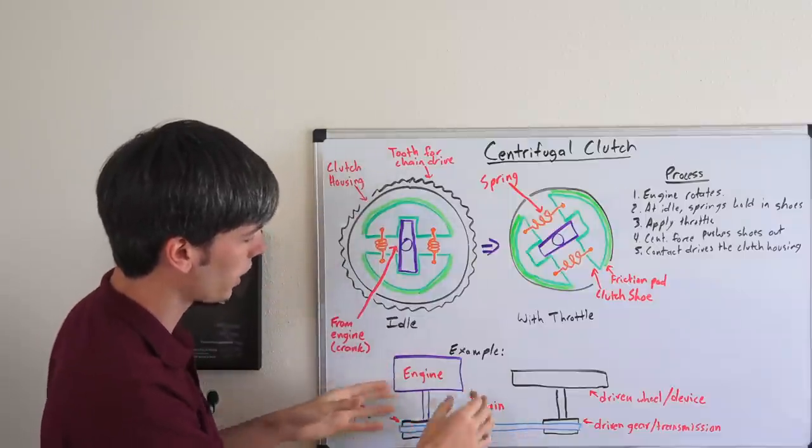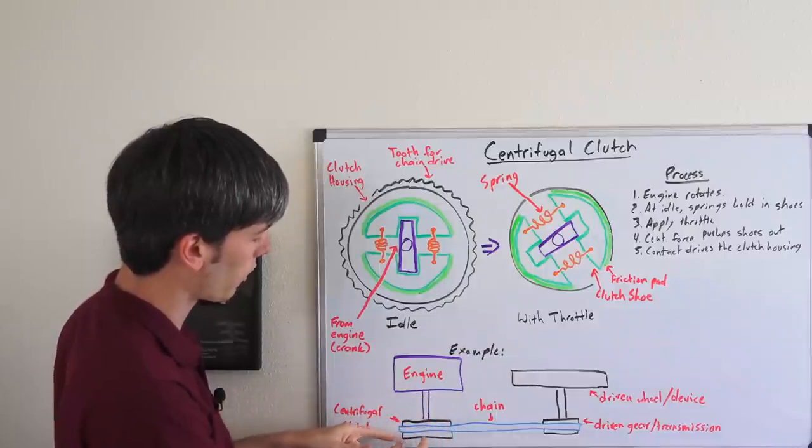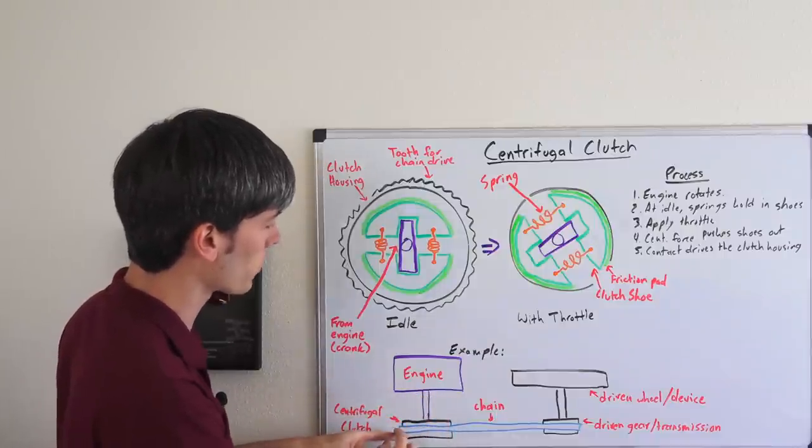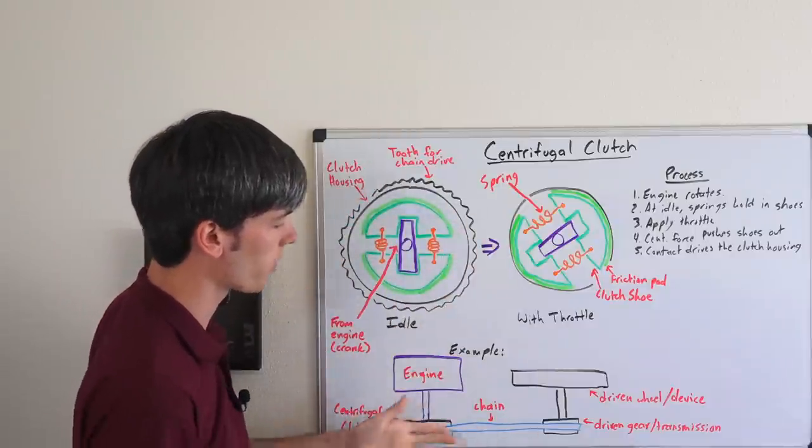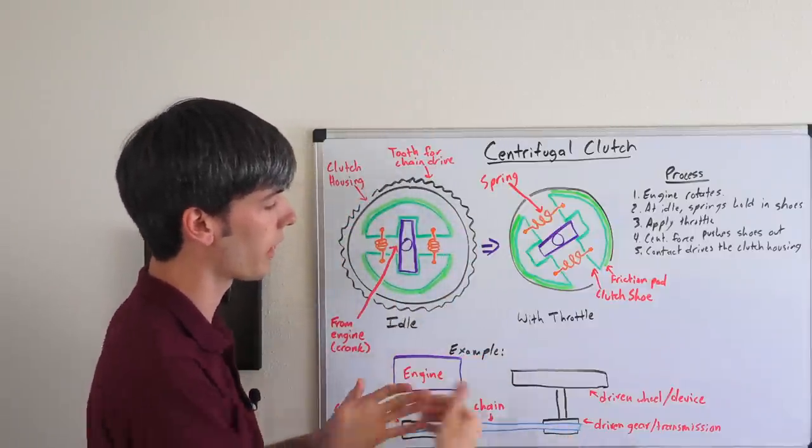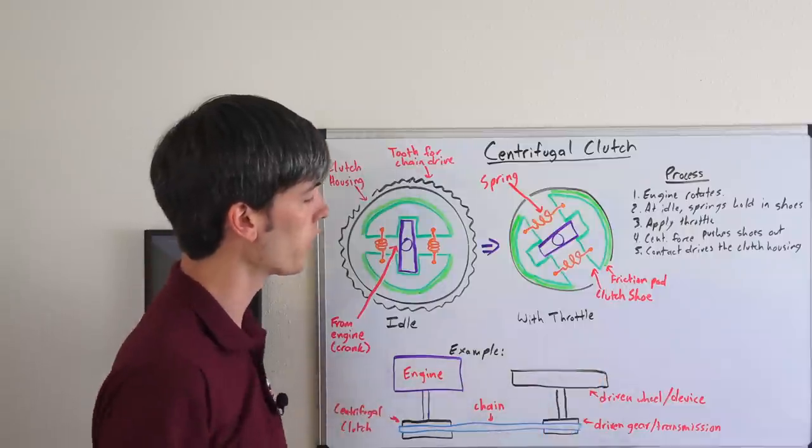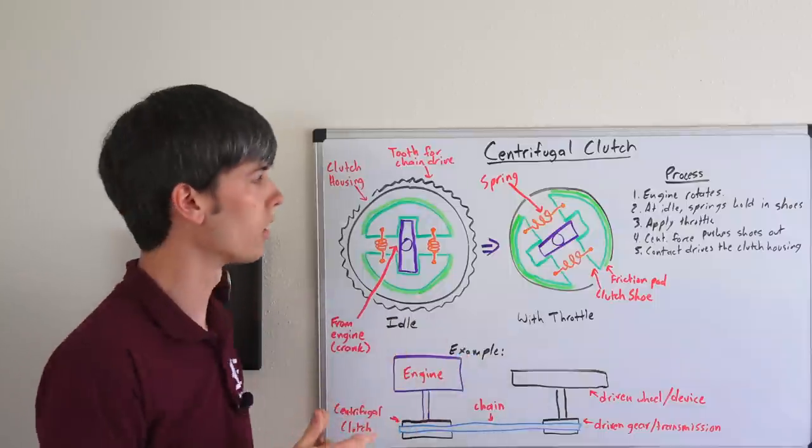So looking at an example, here's basically an engine with the drive shaft coming in and then that'll be matching up with this centrifugal clutch. In this case here, I've drawn teeth around it. And so this could be chain driven. And then you're driving this driven gear here or a transmission, something like that. And then that can drive a driven wheel or device.